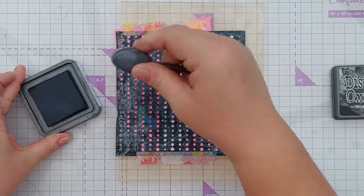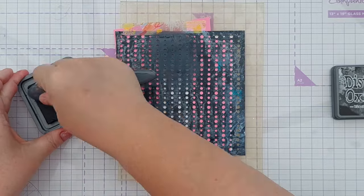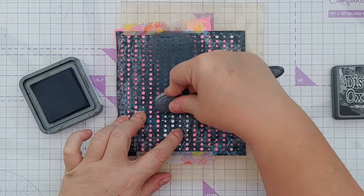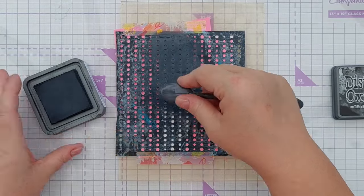And to blend through my stencil, I'm going to use black soot distress oxide. It's not the blackest of blacks, it's more a dark charcoal grey I think but it'll do the trick for this.